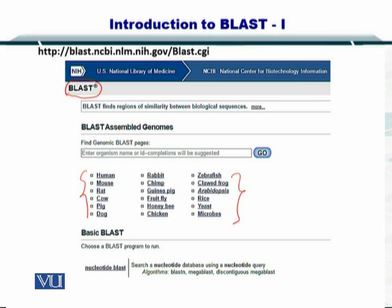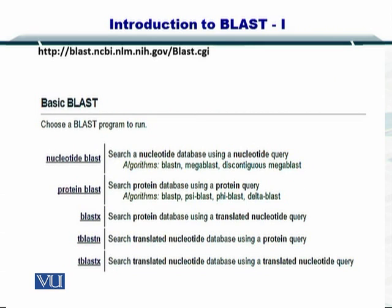'BLASTing' is a commonly used term by bioinformaticians, which essentially means comparing sequences. If you scroll down the page, you will find that there are several types of BLAST, such as nucleotide BLAST, protein BLAST, BLASTX, TBLASTN, and TBLASTX. You need to be in a position to select which kind of BLAST algorithm you want to use, as each one of them has a specific purpose.